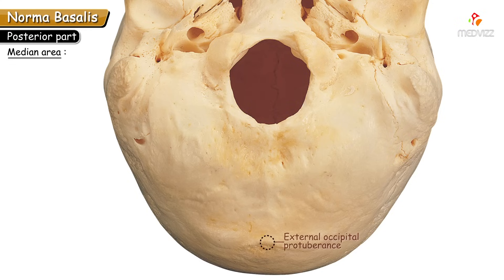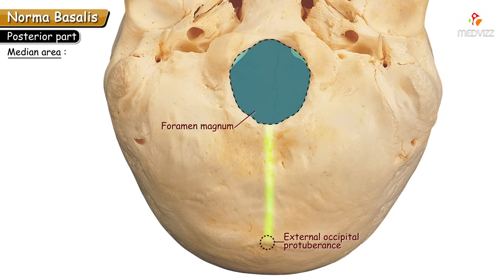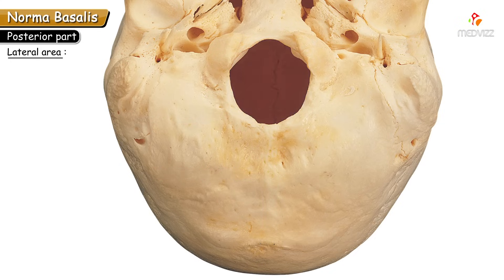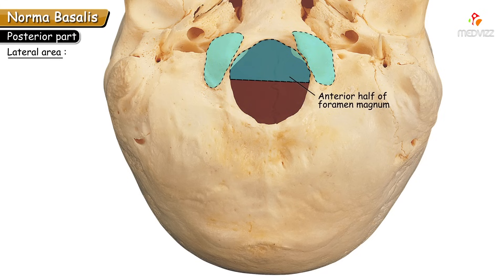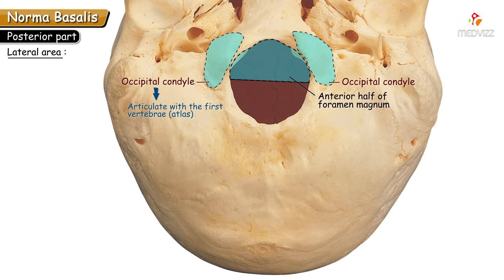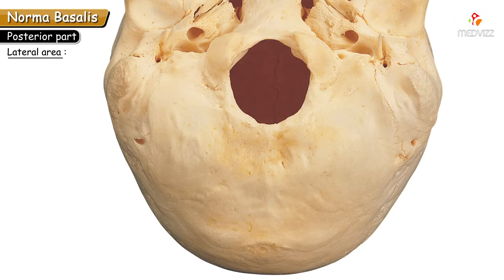In the median area, the external occipital protuberance is visible, and tracing anteriorly from it to the foramen magnum is a median bony elevation called the external occipital crest. In the lateral areas, just anterolaterally to the foramen magnum, are the occipital condyles, which articulate with the first cervical vertebra (atlas).